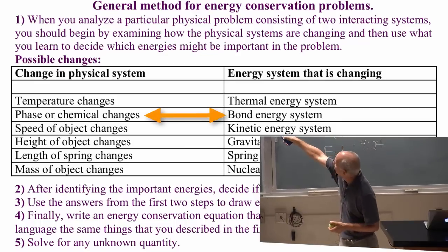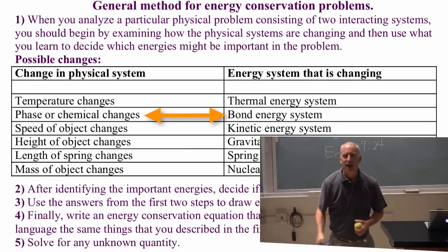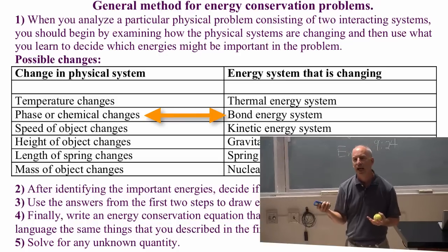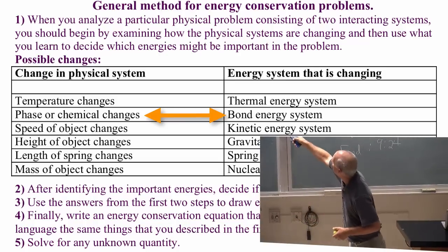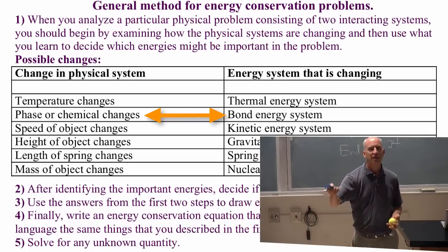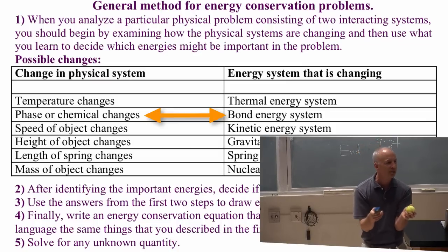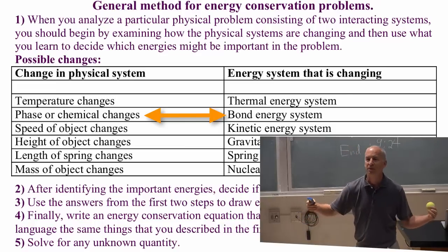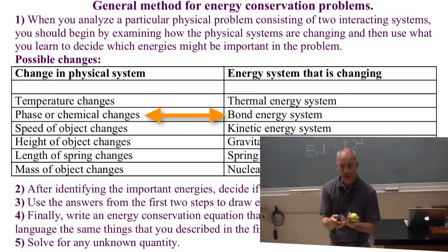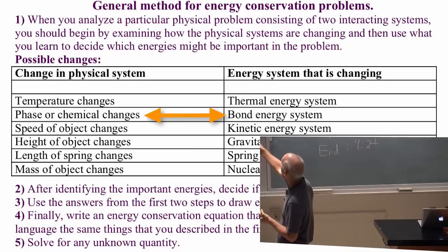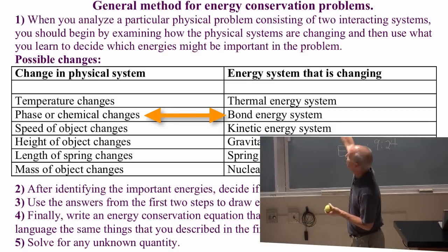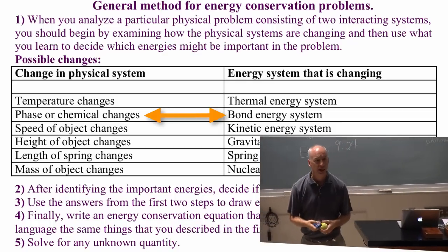Bond energy changes are indicated by phase changes. It changes the number of bonds. Phase changes or chemistry. If you start out with one set of compounds and you end up with another set of compounds with all the same set of atoms, then there was some sort of chemical change and chemical changes all involve bond energy changes.